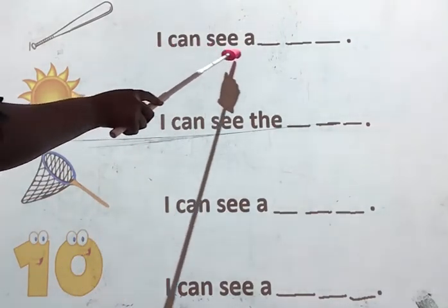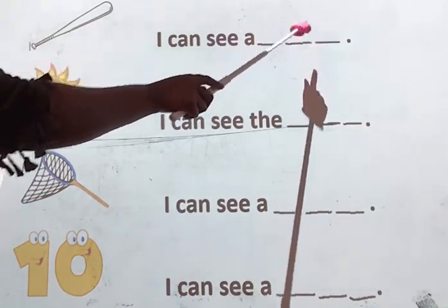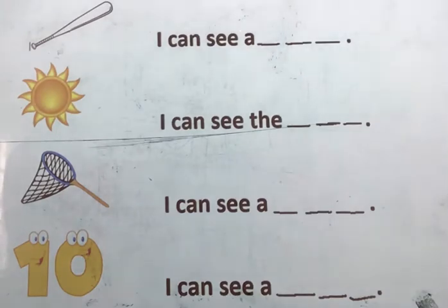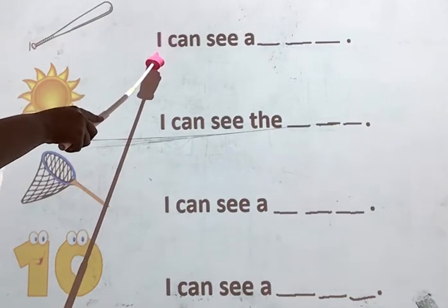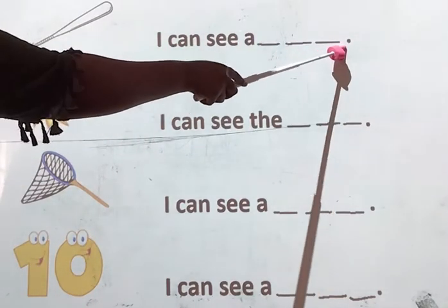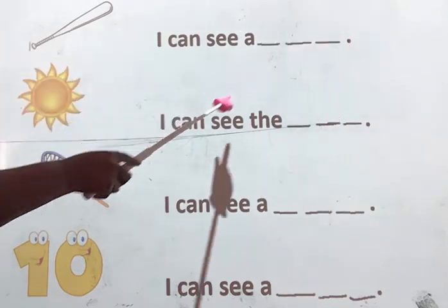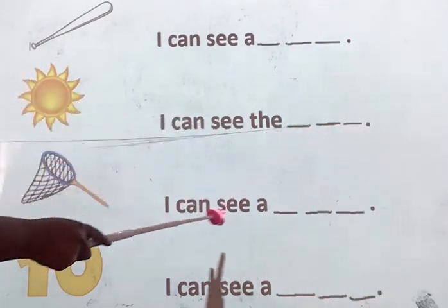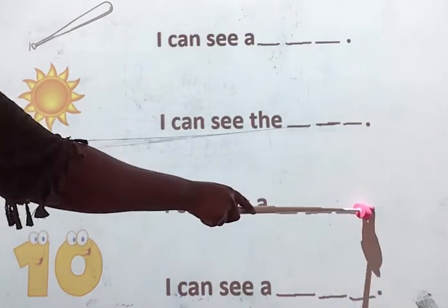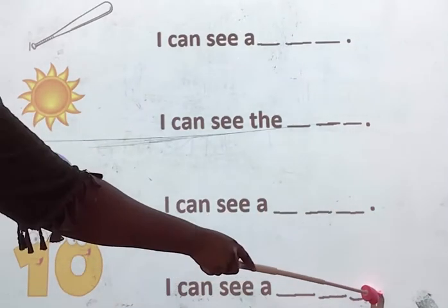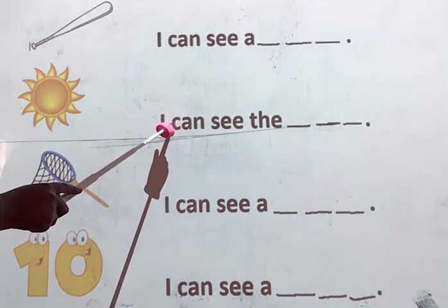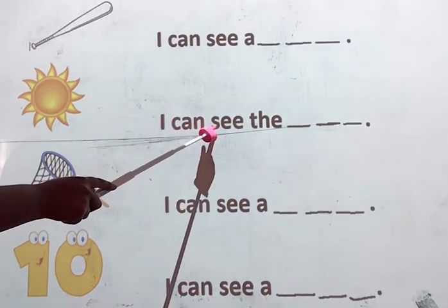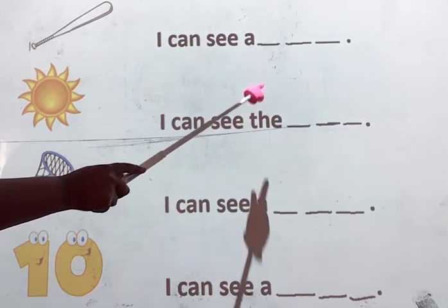Then later we are going to read the sentence and we'll write the missing word right there. Now, when reading a sentence, remember: a sentence begins with a capital letter and ends with a full stop. Capital letter, full stop. And after each word, there is a space.